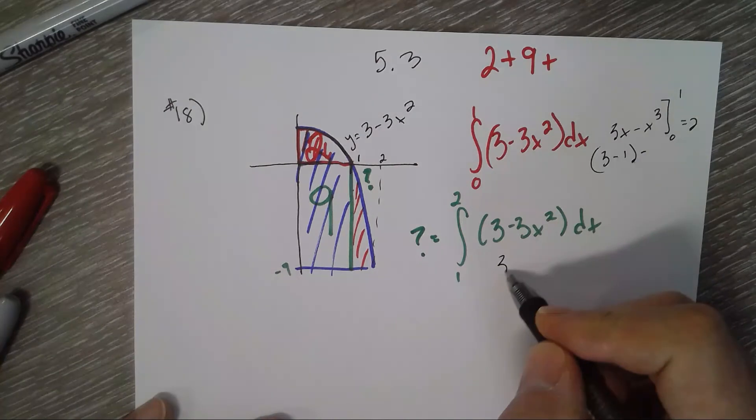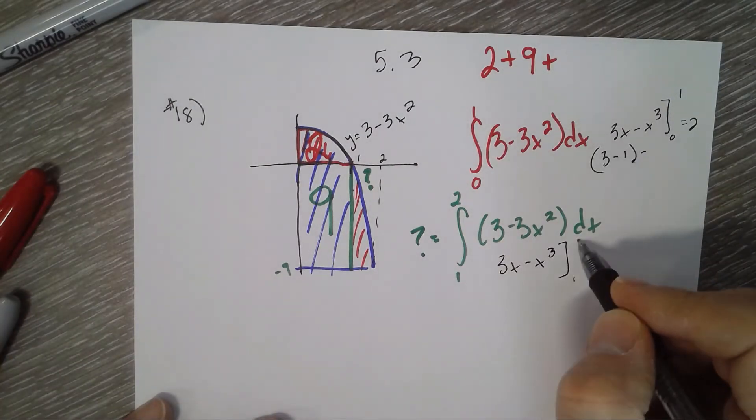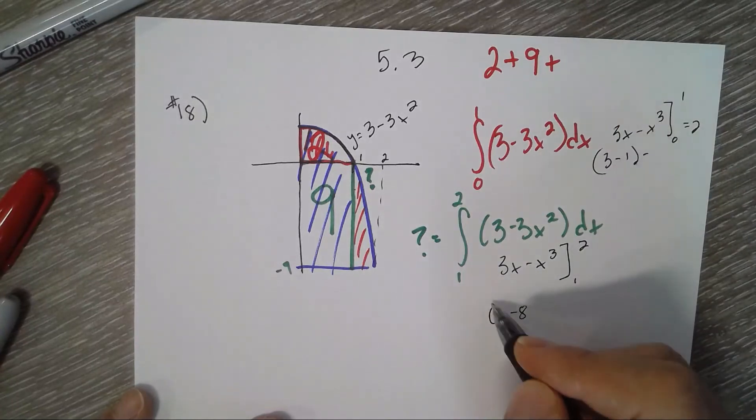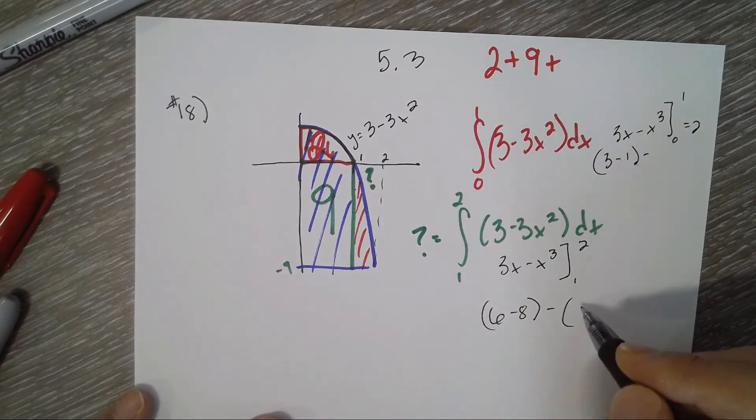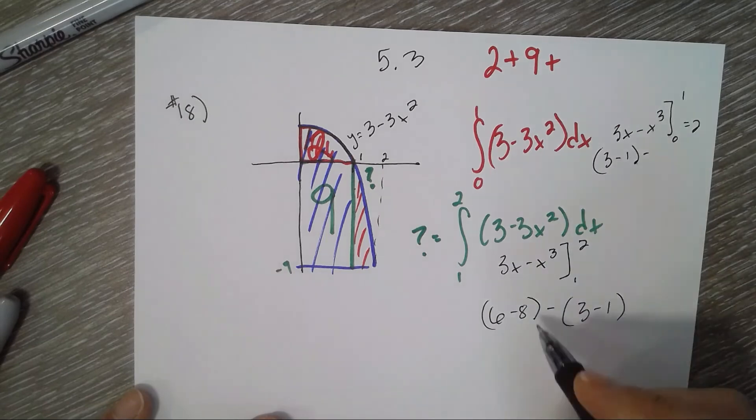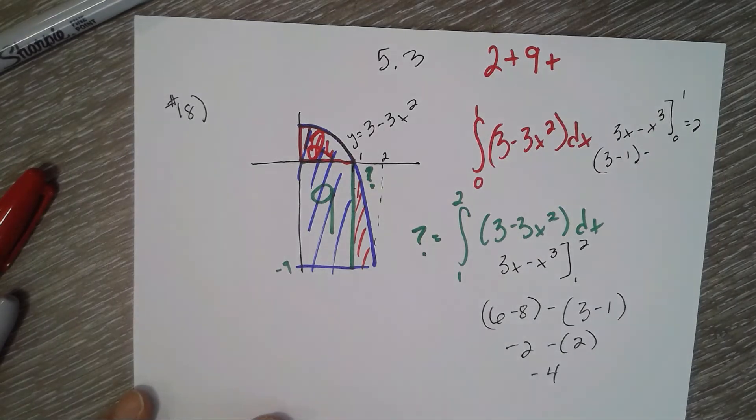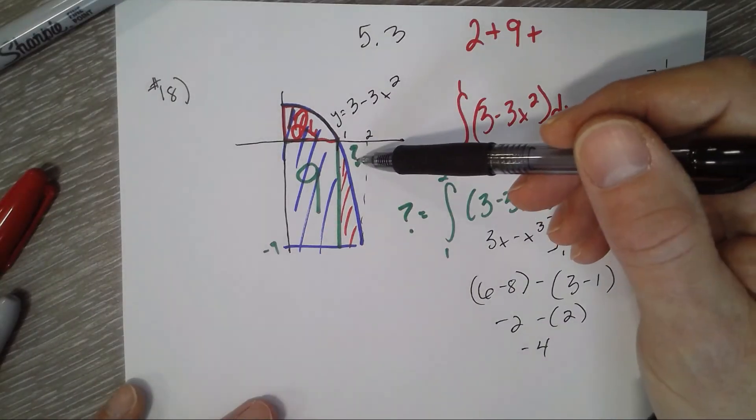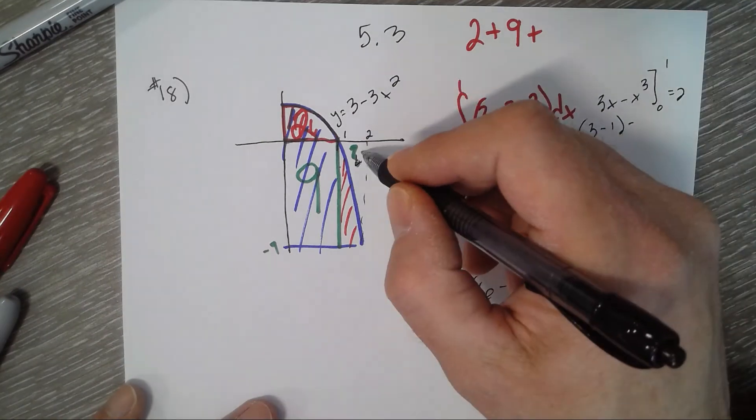So 6 minus 8 minus 3 minus 1 gives me negative 2 minus 2, so we get negative 4. So we knew it was going to be negative 4, so we'll call that actually positive 4, which means that would be 5.